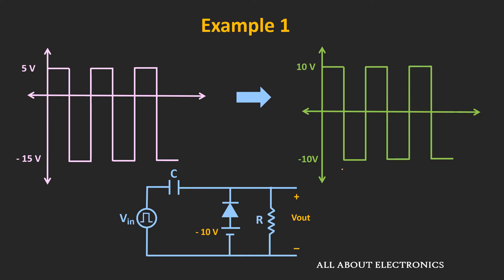Using this shortcut method, we can easily find the output waveform. But in this method, we need to ensure that the diode is conducting at least for some duration during the time period of the waveform. Because whenever the diode is conducting, it will offer a very low resistive path to this capacitor, and due to that, this capacitor will get charged to some reference voltage.